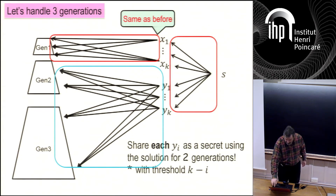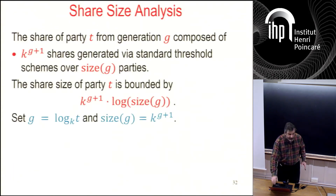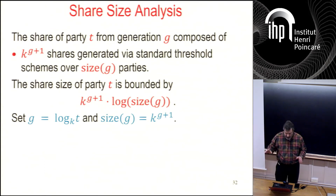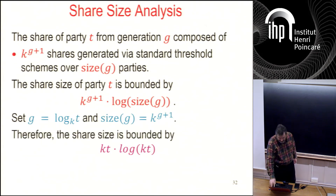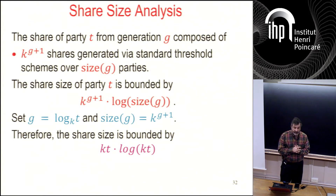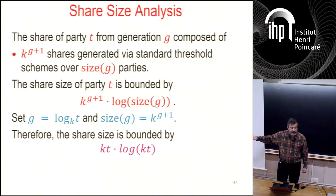The shares grow from generation to generation, but the generations grow even more — generation J has size K^J. The end result is that the basic scheme has share size roughly KT log(KT). But we never use this with a large T — we shrink it using domain reduction, so it's not too bad.